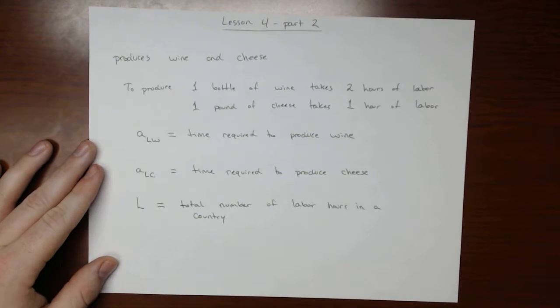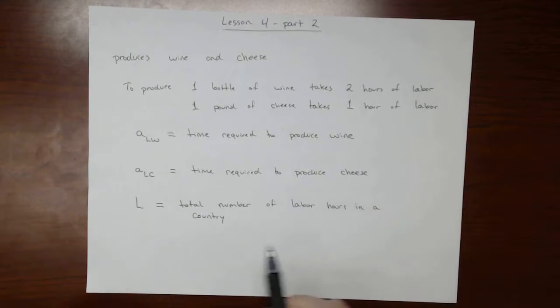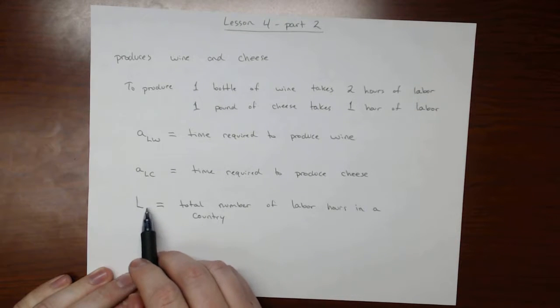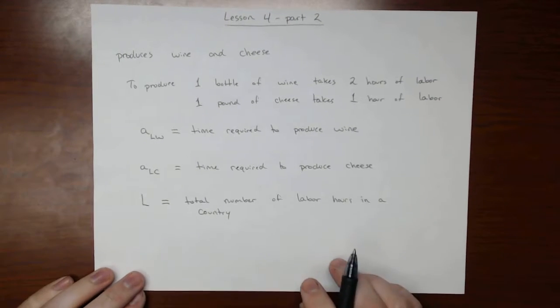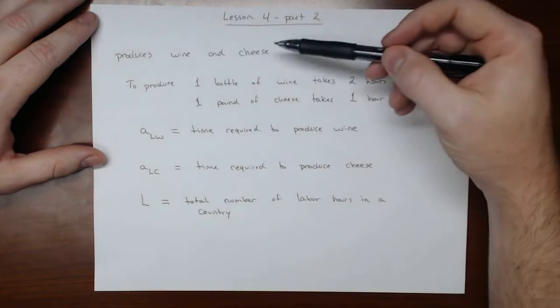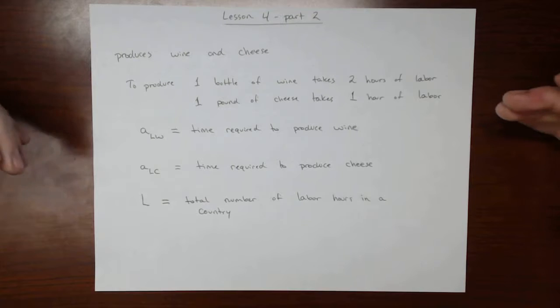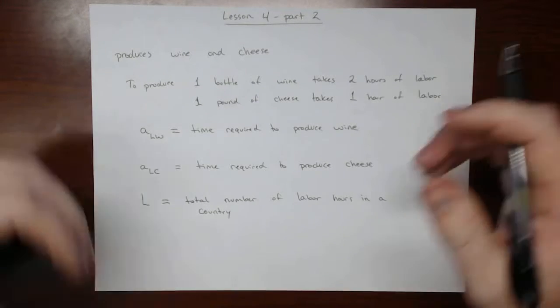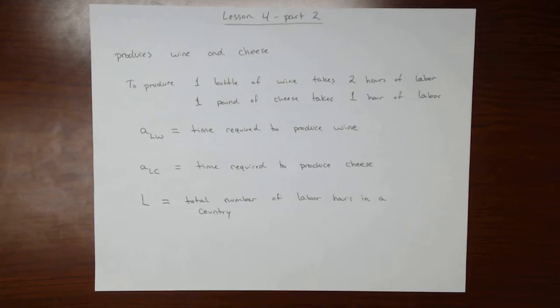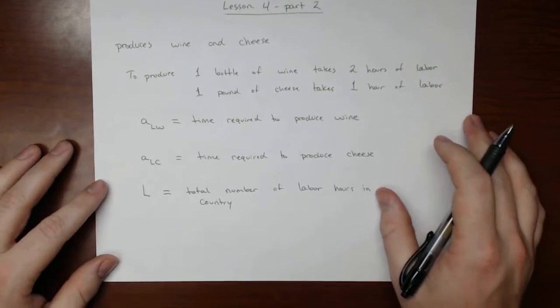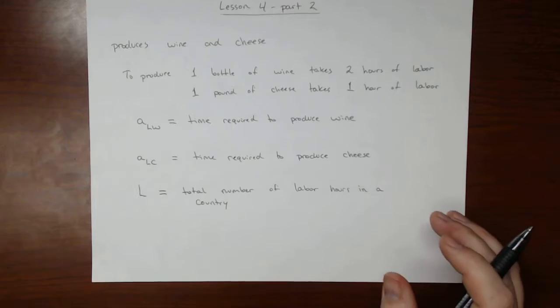So then we know this country has some number of hours L that they can devote towards producing either wine or cheese. Again, you cannot make wine and cheese at the same time, or each individual worker cannot do that. If you have two different workers, one can produce wine and one can produce cheese, but they cannot produce both simultaneously.